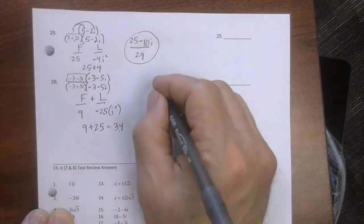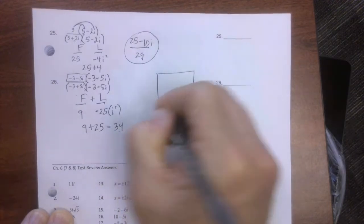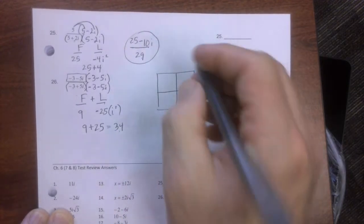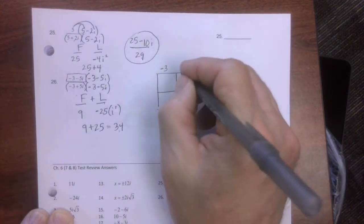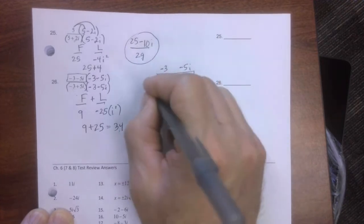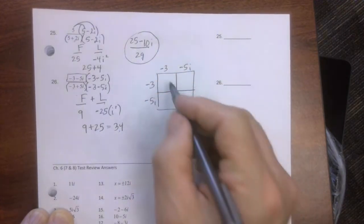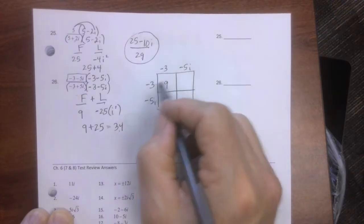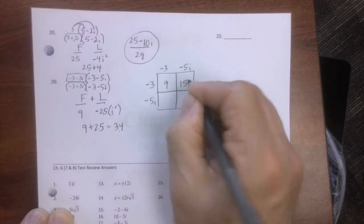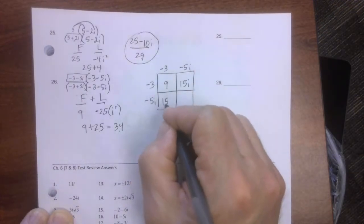Up in the numerator, we can't fool. We have to foil because they are not conjugates. They're exactly the same. So negative 3 minus 5i times negative 3 minus 5i. This times this is 9. This times this is 15i. This times this is 15i.